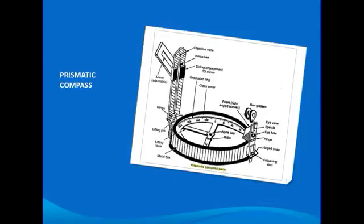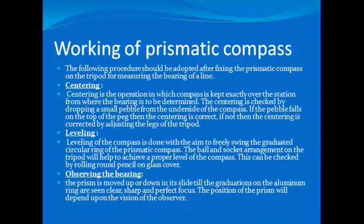Now, working of the prismatic compass. This can be used while holding it in hand, but for better accuracy it is usually mounted on a light tripod which carries a vertical spindle in a ball and socket arrangement to which the compass is screwed. By means of this arrangement, the compass can be placed in position easily.